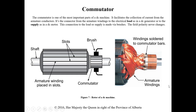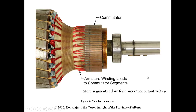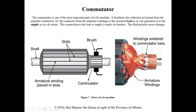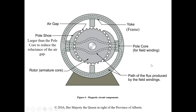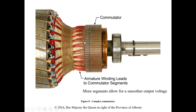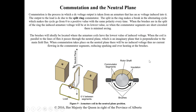Looking at commutator bar sections: the brushes make contact with the segments, and the connection loops through the armature winding and comes back approximately 180 degrees on the other side. A rotor with very small commutator sections has way more armature windings, which gives a much smoother output. With more armature windings, we don't get that deep valley before another winding peaks, giving us a smoother output compared to a design with fewer windings.